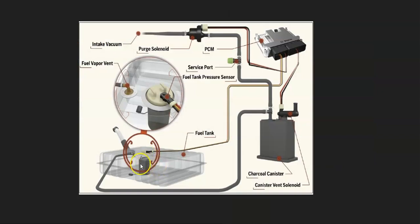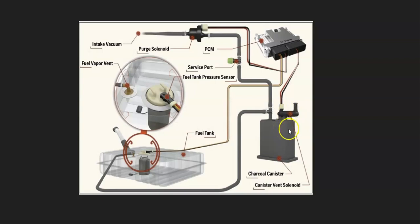The basics of what's going on inside the EVAP system: you've got gas vapors coming from the gas tank, going out through a hose, then up to what's called a charcoal canister. The charcoal canister mainly stores the vapors when the engine's not running. It also has what's called a controlled vent valve that the onboard computer uses to test the system.